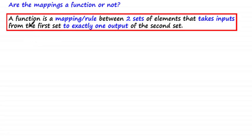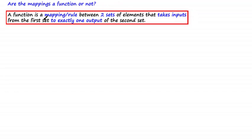A function is a mapping or a rule between two sets of elements that takes inputs from the first set to exactly one output of the second set. It's important that we understand the set of possible inputs, otherwise referred to as the domain of a function, and the set of possible outputs, otherwise referred to as the range of a function.